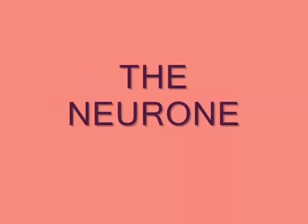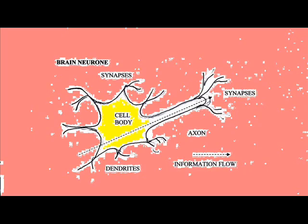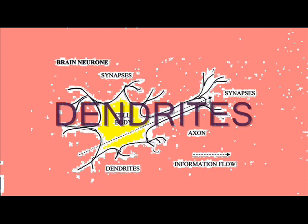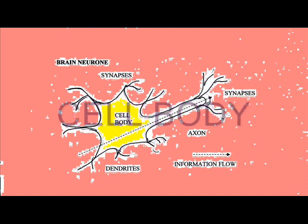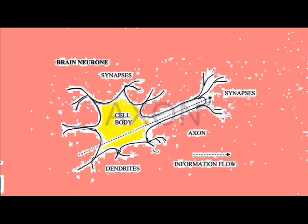The brain contains a huge number of interconnected neurons. Each neuron has dendrites, a cell body, an axon, and then further dendrites.